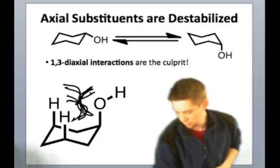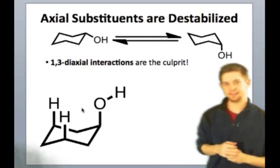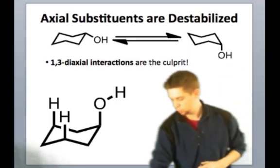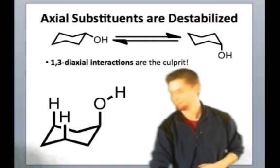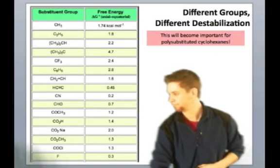As a result, that axial conformation is destabilized relative to what the equatorial conformer looks like.